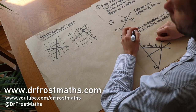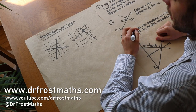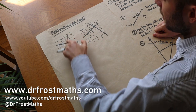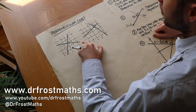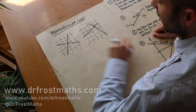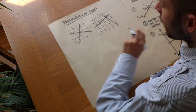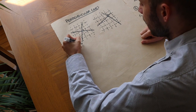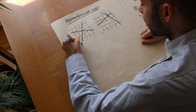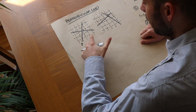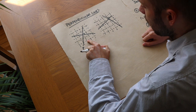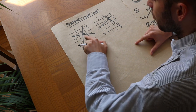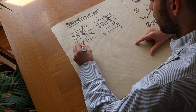Hello and welcome to this video on perpendicular lines. Perpendicular just means at right angles to each other, so these two lines are perpendicular because the angle between them is 90 degrees. Now let's investigate the gradients of each of these lines. The gradient of this line — each time x increases by 1, the y value increases by 2, so the gradient would be 2.